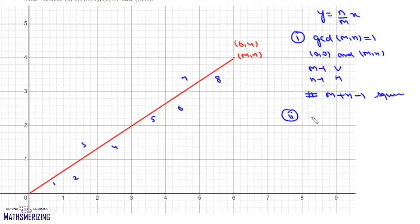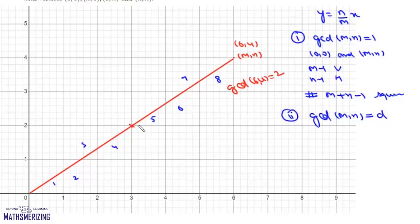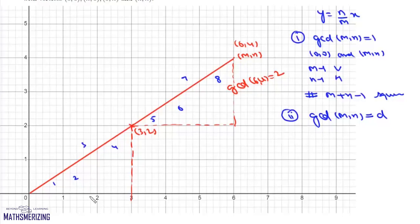For the second case when gcd(m, n) equals d (not 1), take the example gcd(6,4) equals 2. We split into d segments: from (0,0) to (3,2) and (3,2) to (6,4). Each segment contributes 3+2−1 equals 4 squares, totaling 8. So the formula becomes d times (m/d + n/d − 1), which simplifies to m plus n minus d.